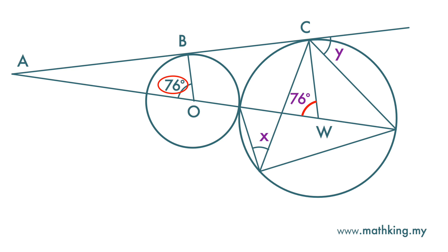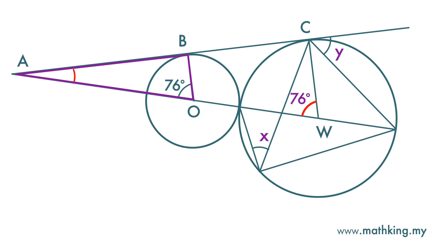Here are two congruent triangles. For the smaller triangle, we have this angle at A, and 90 degrees at B, and 76 degrees at O. For the bigger triangle, we have a common angle at A, and 90 degrees at C. So this angle at the center must equal this angle of 76 degrees.